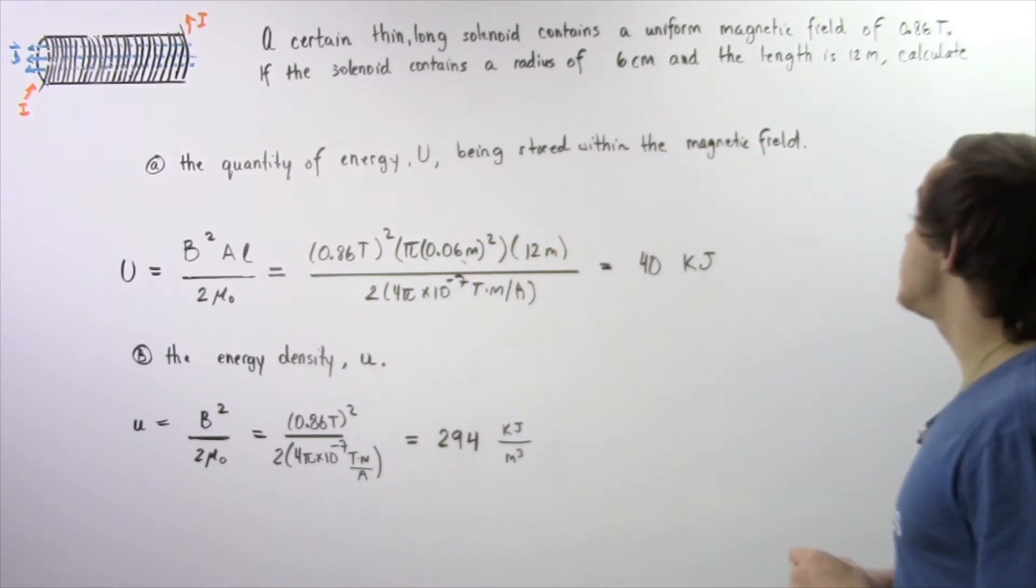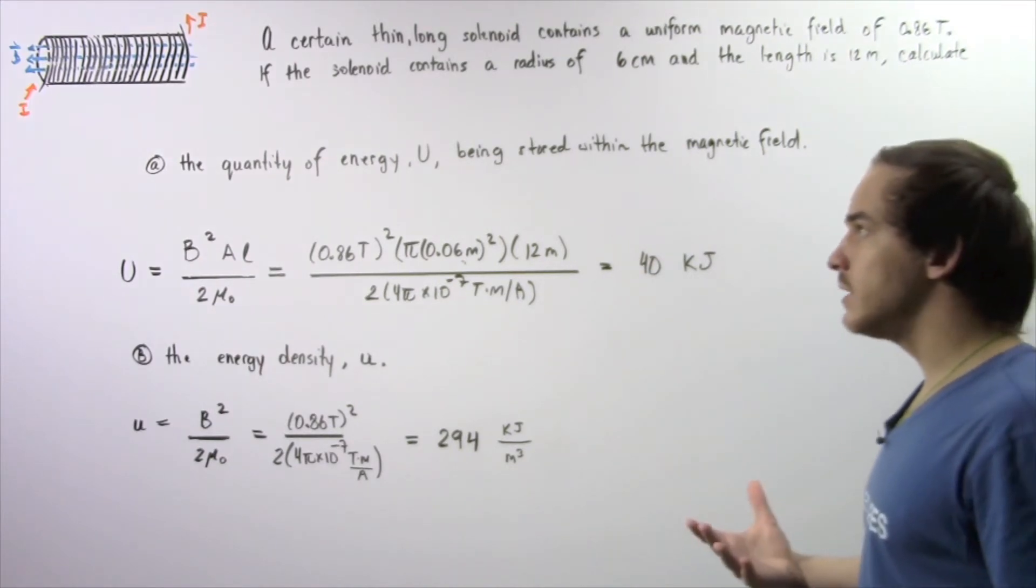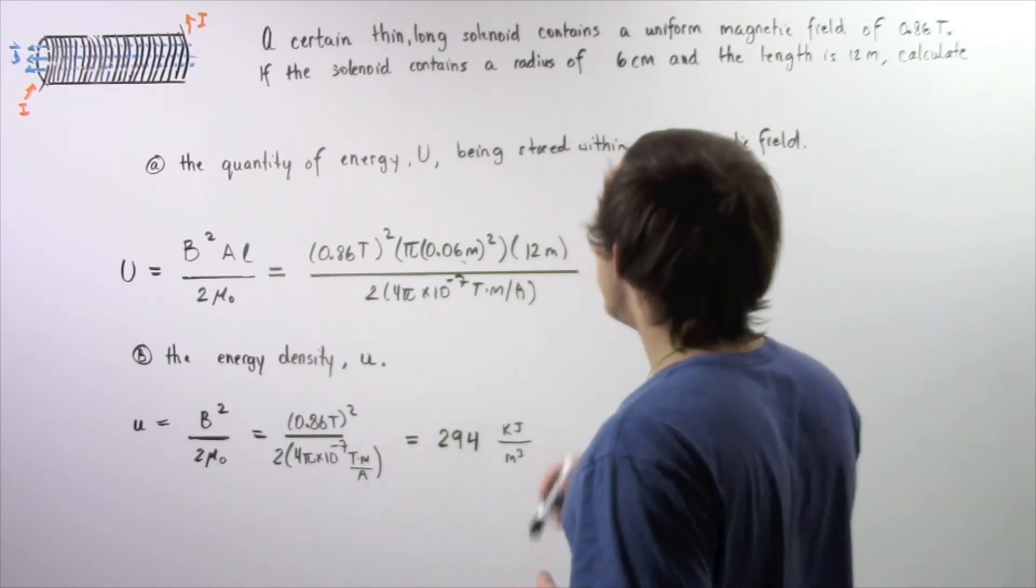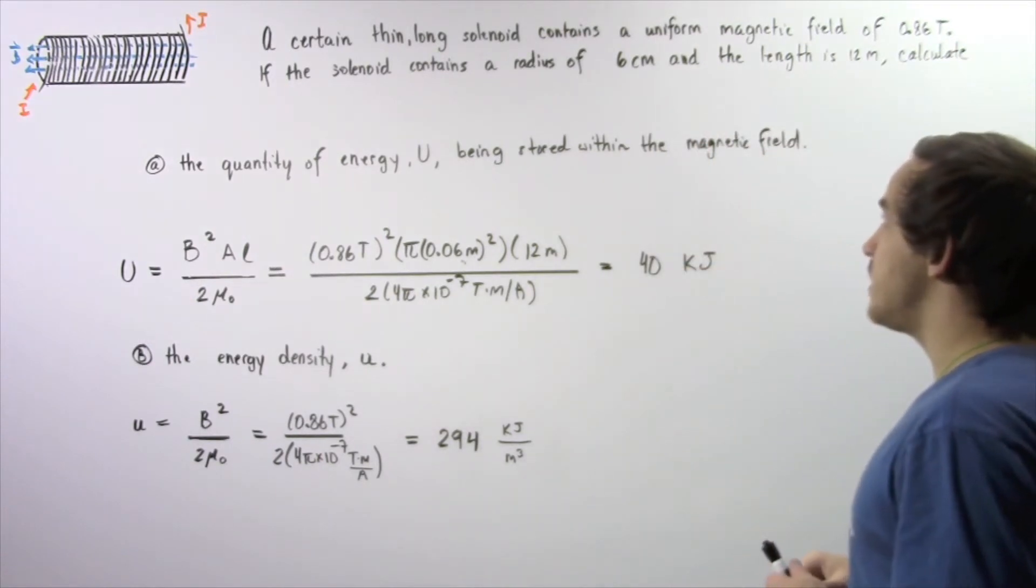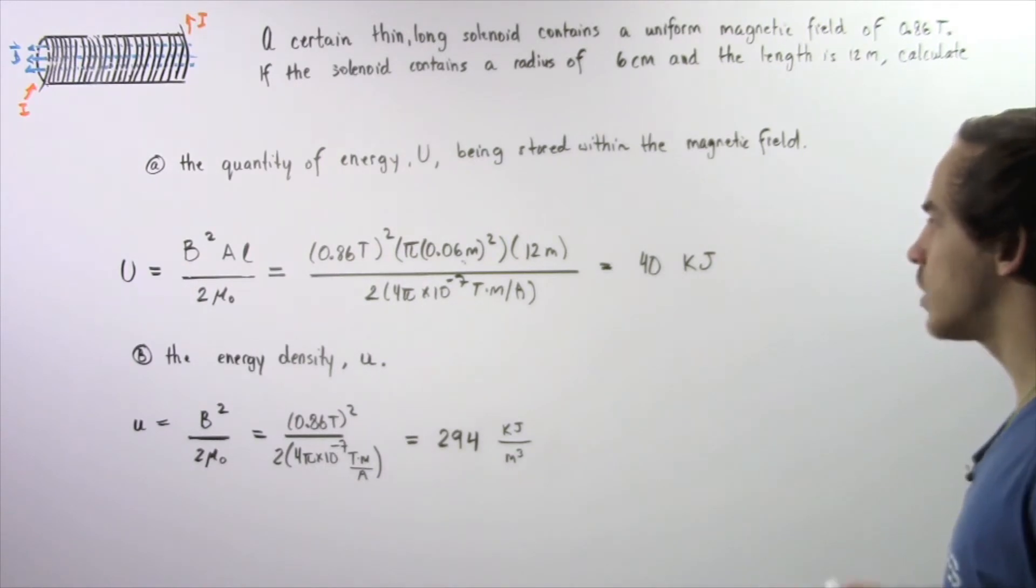The B is given to be 0.86 teslas. Our cross-sectional area is pi R squared. Now the R is 6 cm but we want to convert it from cm to m so we divide by 100.